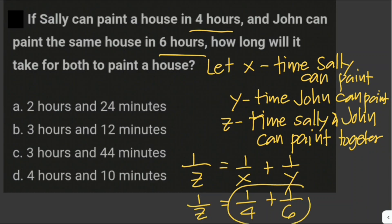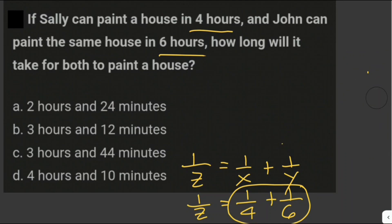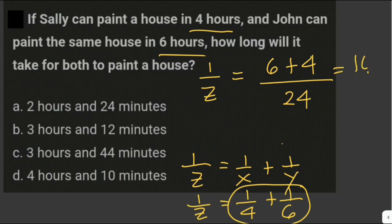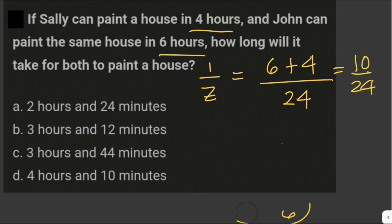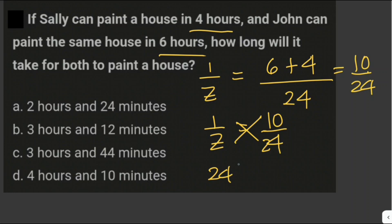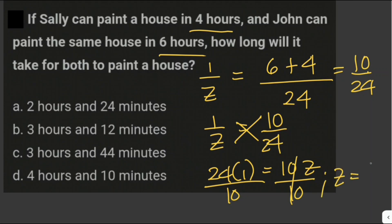We simplify the fractions by finding the LCD, which is 24. So 1/4 plus 1/6 becomes 6 over 24 plus 4 over 24, giving 10 over 24. Cross multiplying: 24 times 1 equals 10Z. Dividing both sides by 10, Z equals 24 over 10. Since 24 over 10 is not in the choices, we simplify it as a mixed fraction, which is 2.4 hours.